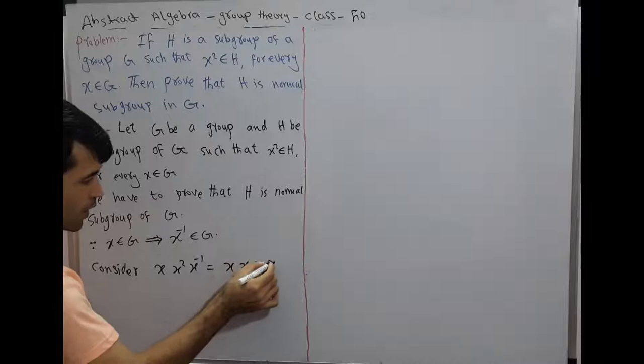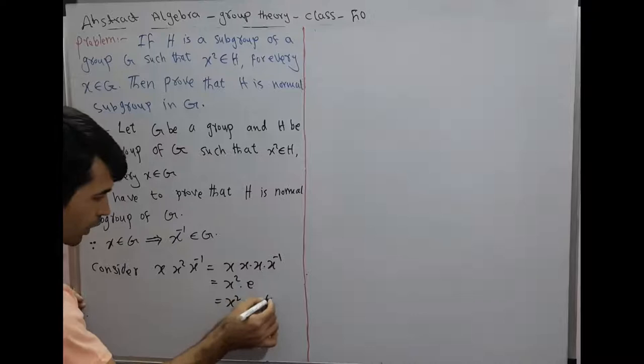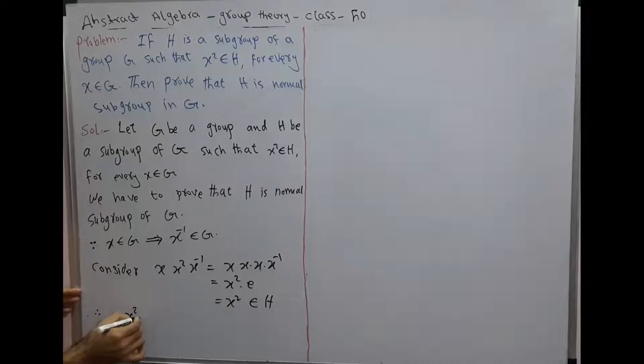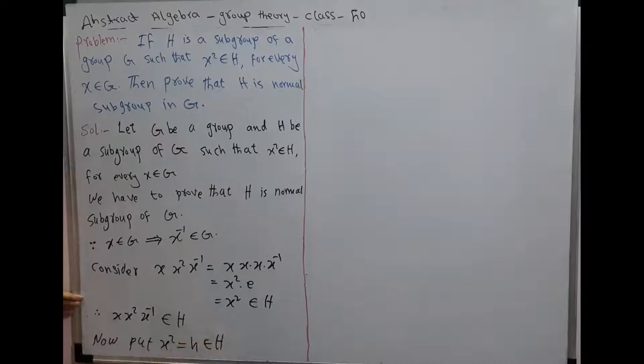We compute: x times x squared times x inverse equals x times x times x times x inverse, which simplifies to x squared. This belongs to H. Therefore x times x squared times x inverse belongs to H.